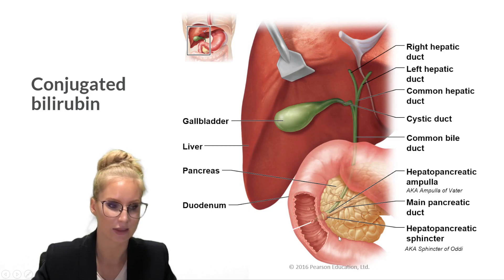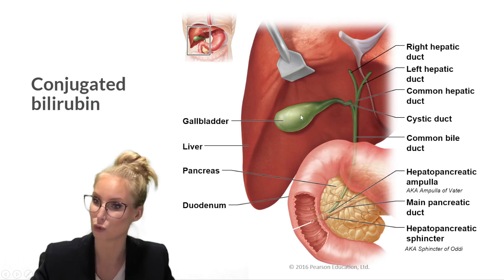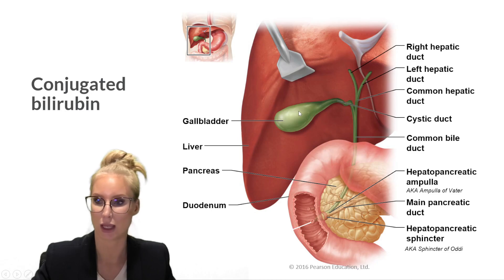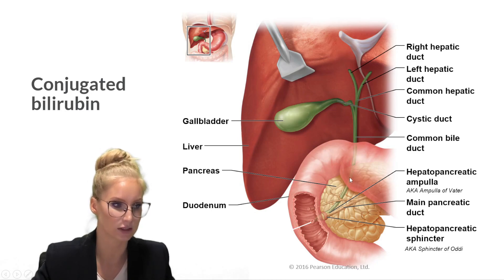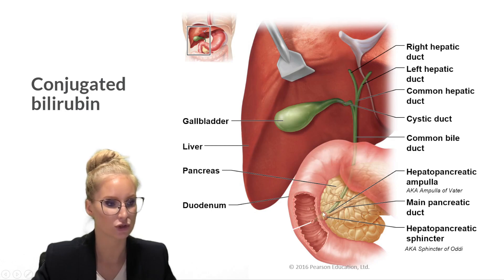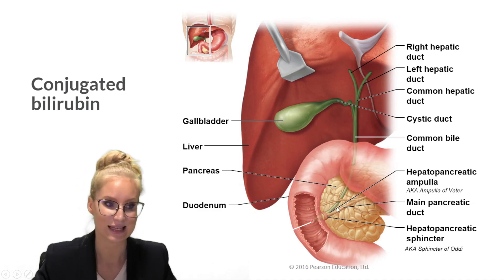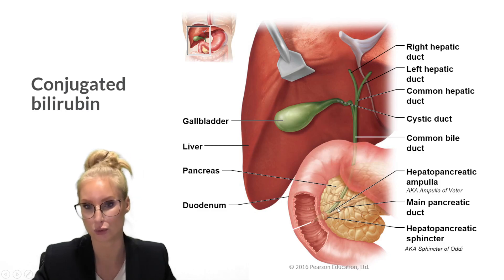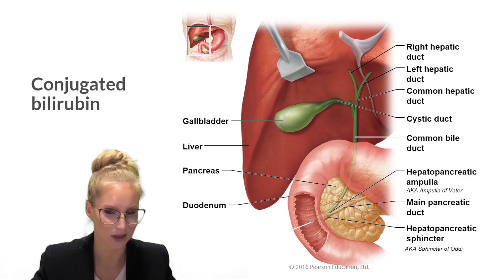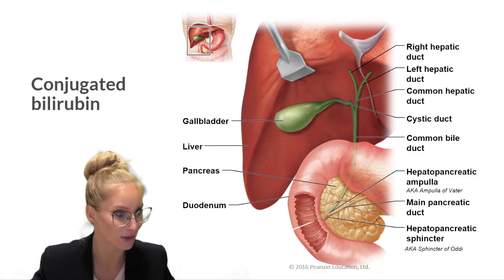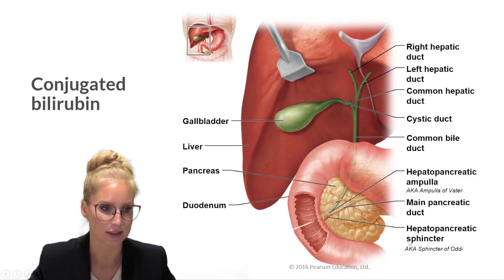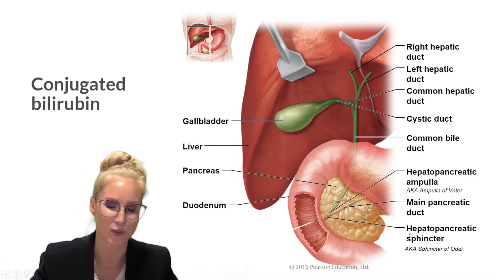The function of the hepatopancreatic sphincter includes indirectly filling the gallbladder, regulating the release of contents from the gallbladder and pancreas, and also protecting those organs from the contents of the duodenum — for example, stopping the reflux of acids into that area, which could cause chemical irritation. It has a few different names but we'll be referring to it as the hepatopancreatic sphincter.